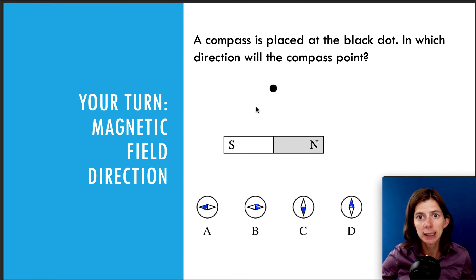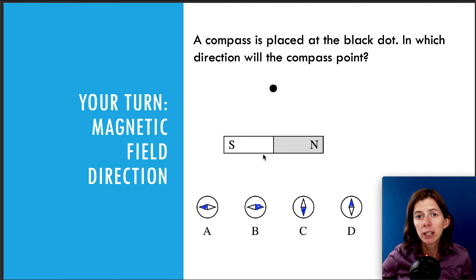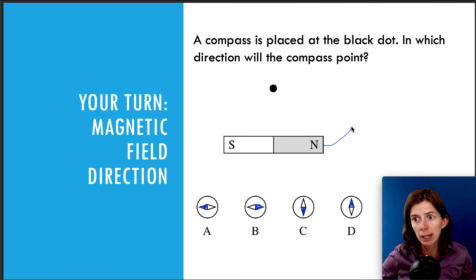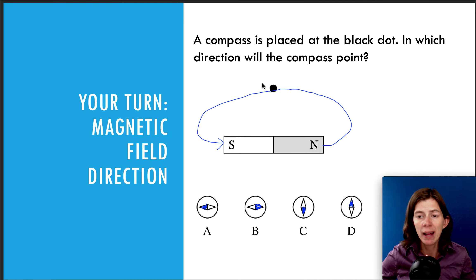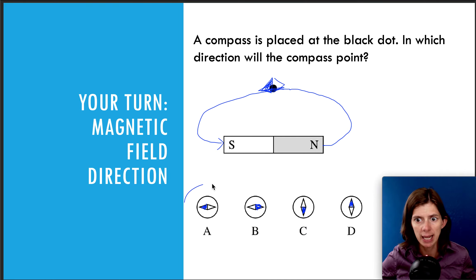Let's take a look at this question dealing with magnetic field direction. It says a compass is placed at the black dot — in which direction will the compass point? I have colored in the north pole of each compass needle in blue here. Let's remember that the magnetic field lines point in the direction that the north pole of a compass needle points. They point from the north pole to the south pole. The north pole is over here, so the magnetic field lines point from the north pole to the south pole. At the location of the black dot, the compass needle is pointing to the left. That means the north pole of that compass needle is going to be pointing to the left. The north pole of your compass is attracted to the south pole, so it makes sense that it points this way. The answer was A.